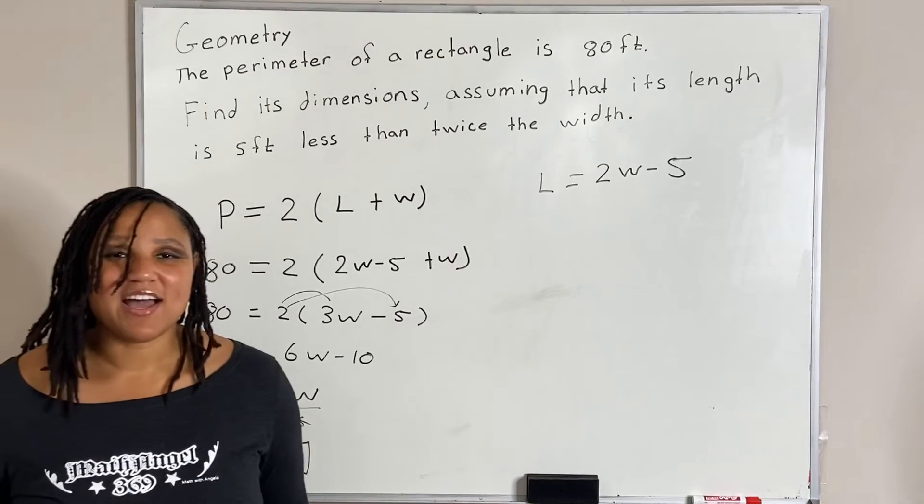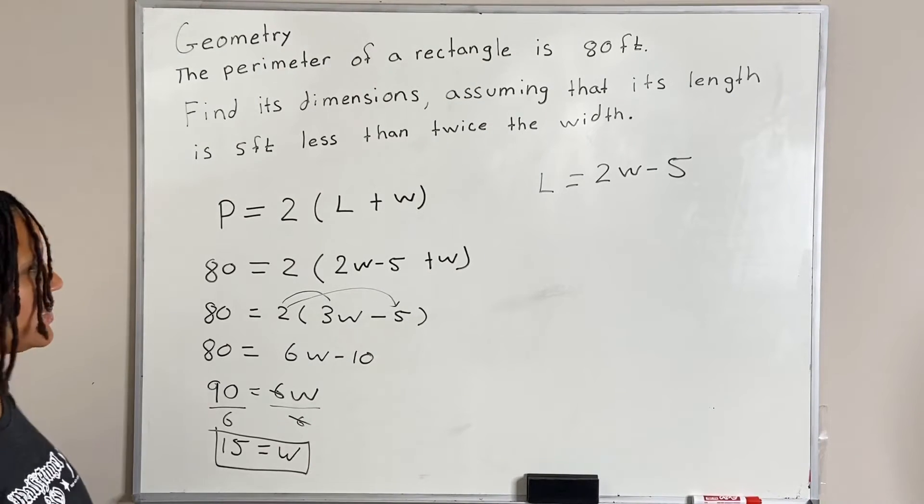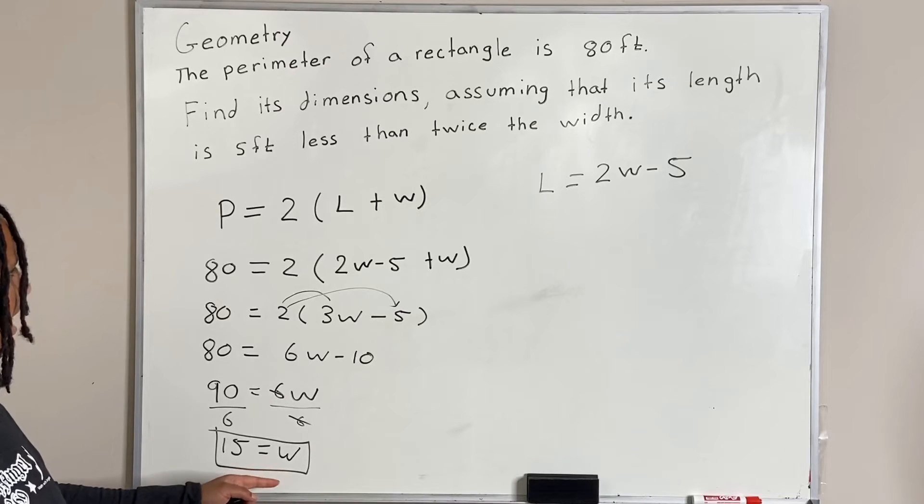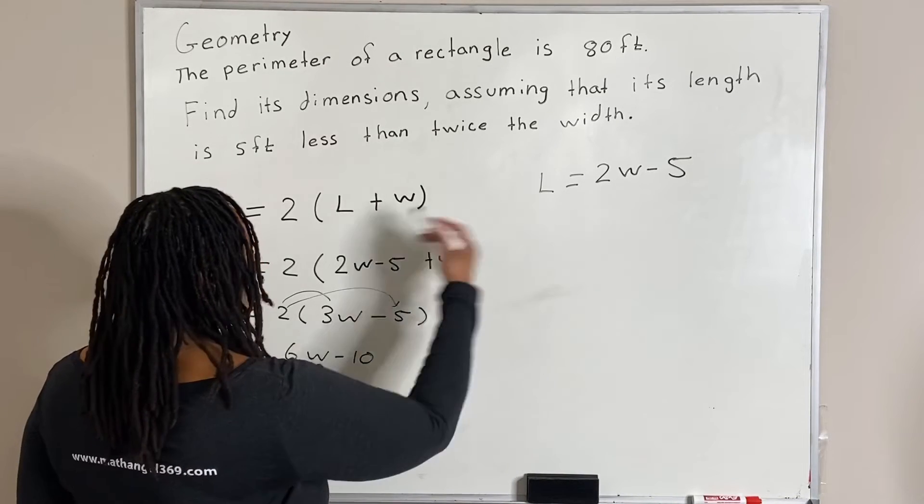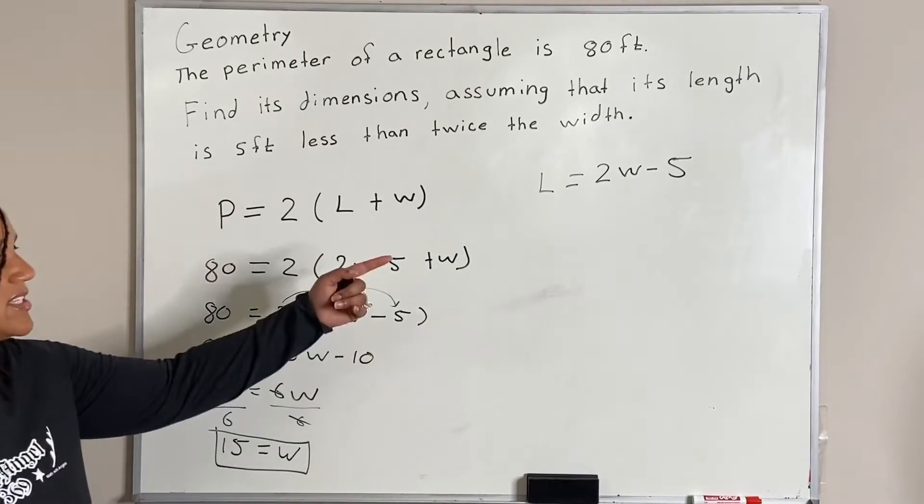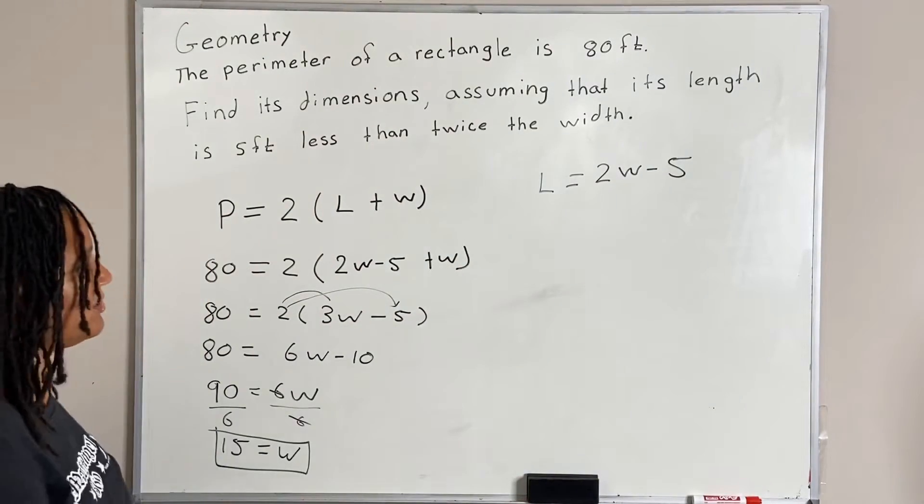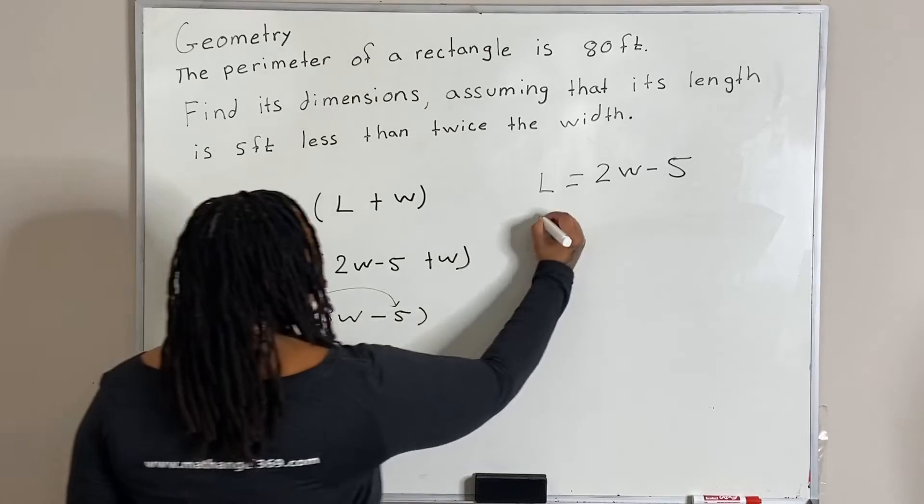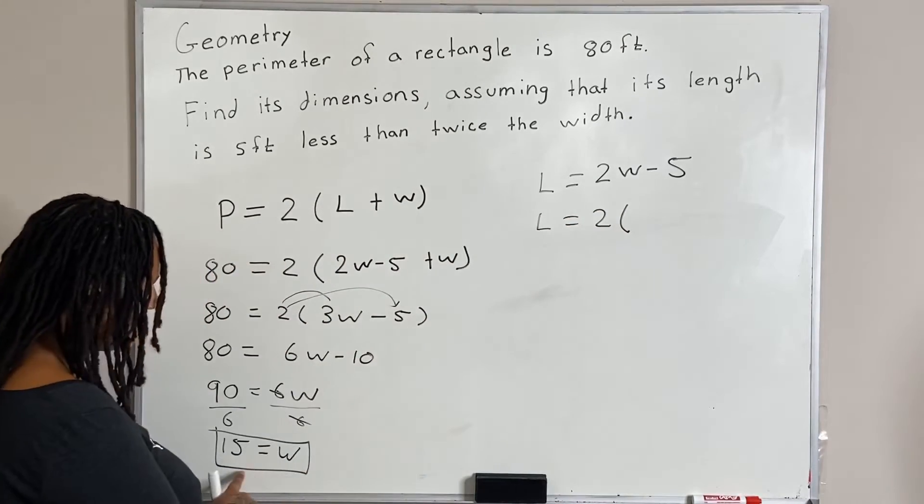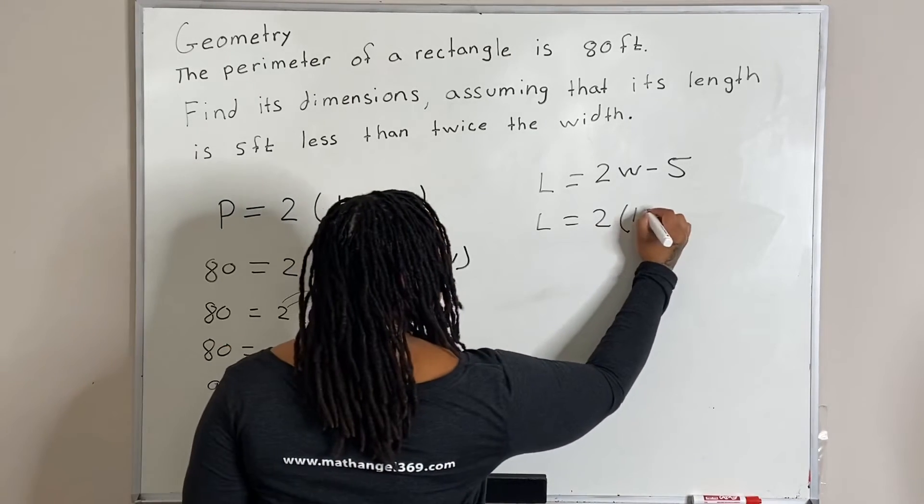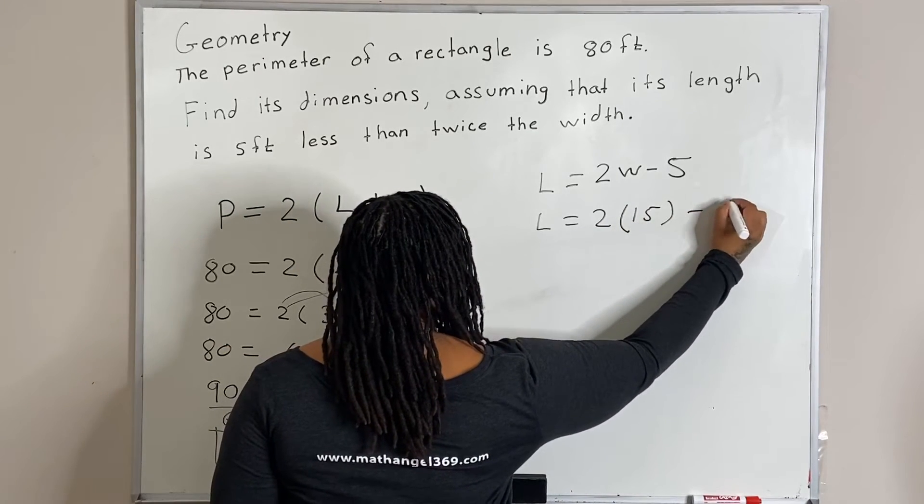Now we need to find our length. So in order to find the length, we're just going to plug in our width into one of these formulas here. So it looks like this would be the easier formula, right? So we're going to say L is equal to 2 times, and we're going to replace w with 15, and then say minus 5.